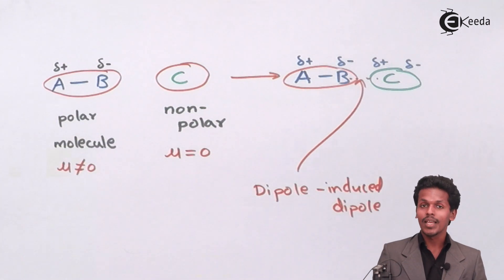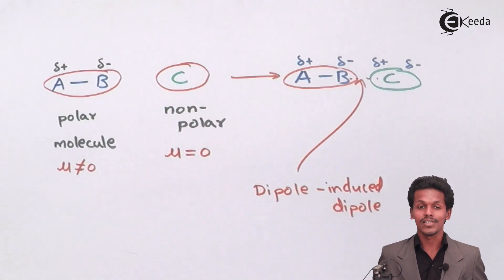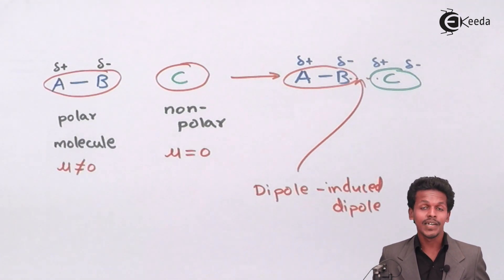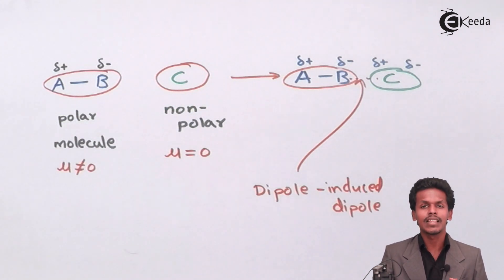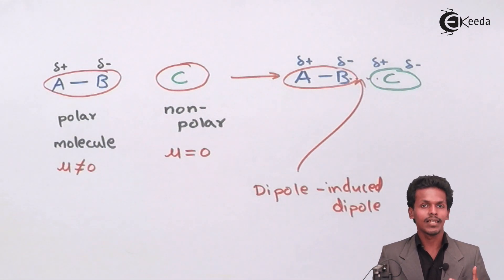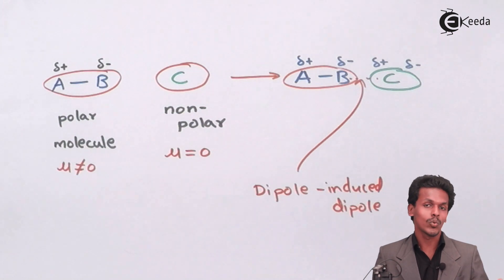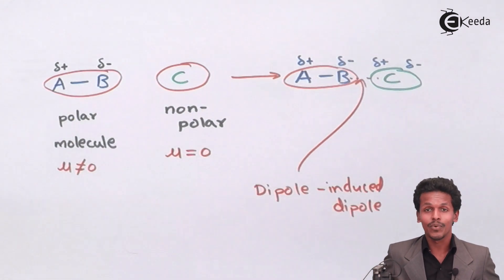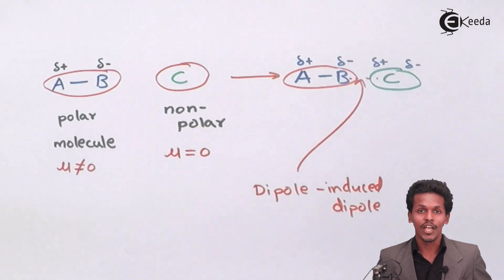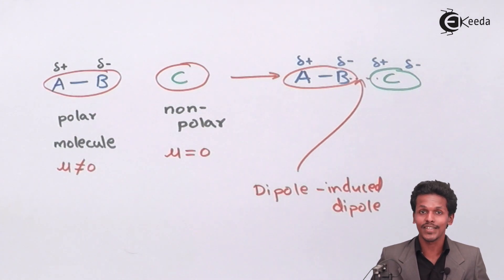That was the dipole-induced dipole interaction — a very easy concept. This kind of interaction takes place in various molecules, for example when HCl interacts with a molecule like methane or nitrogen (N2), which don't have a dipole. Thank you friends for watching this video. I hope you understood this concept clearly. Please share this video with your friends and don't forget to subscribe to the channel.